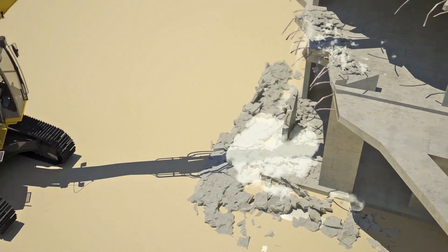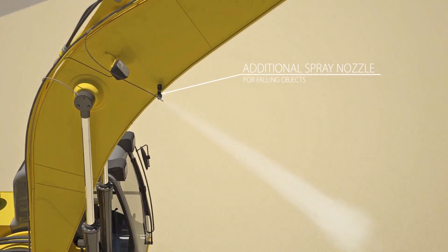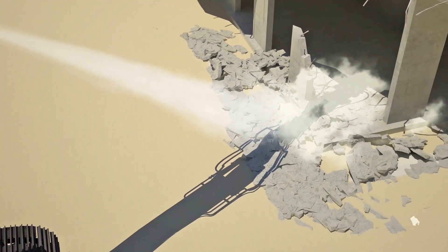Additionally, base machines can be equipped with spraying nozzles for falling objects. Nozzles provide dust suppression for dust created by objects falling and hitting the ground.